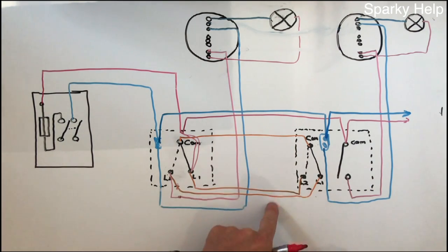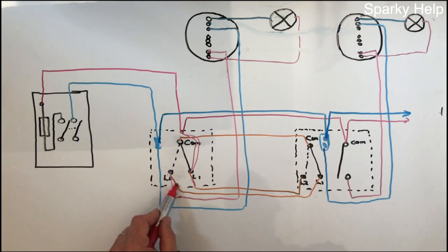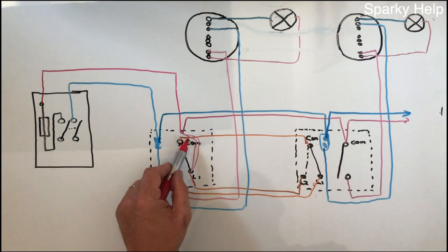Because these are brown, black and grey, what you must do is you would sleeve, you must sleeve all the ends of these conductors, the appropriate colour, which would be brown.